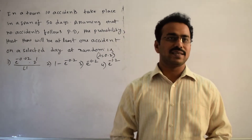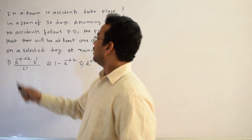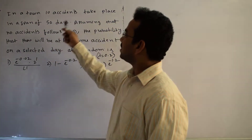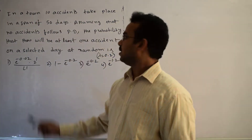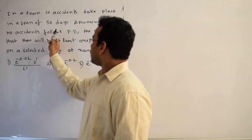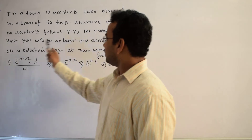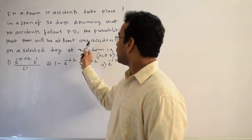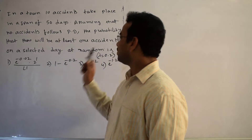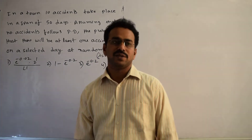Let's discuss the solution of the given question. In a town, 10 accidents take place in a span of 50 days. Assuming that the number of accidents follows a Poisson distribution, the probability that there will be at least one accident on a randomly selected day is to be found, where lambda equals 0.2.